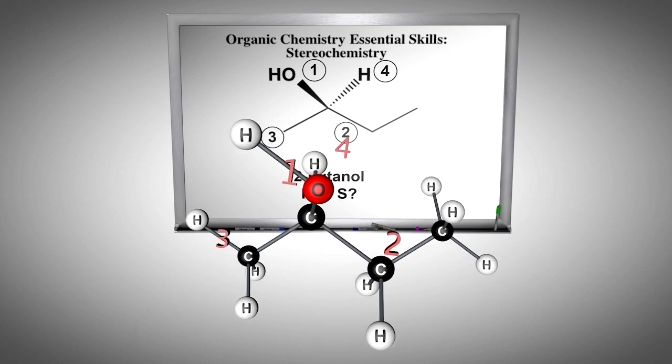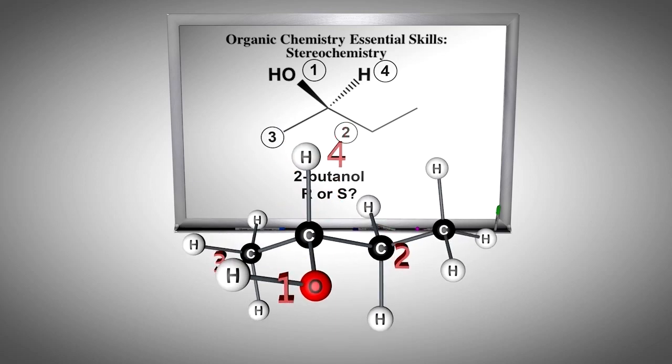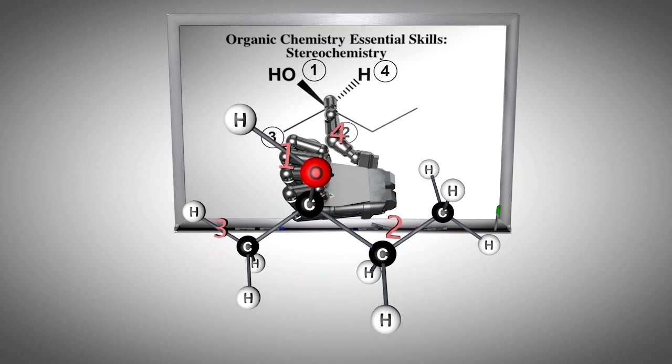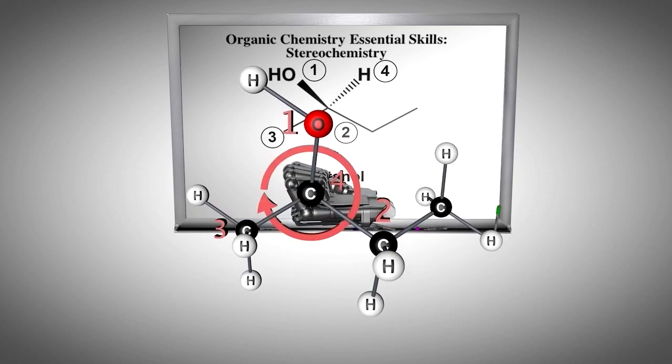Alternatively, if we use the hand method, we see that the fingers will curl in the direction from highest priority to lowest priority for only the right hand, which matches the stereochemical modifier R.